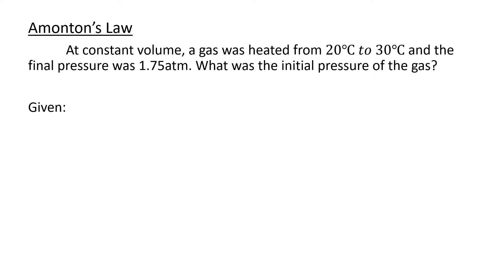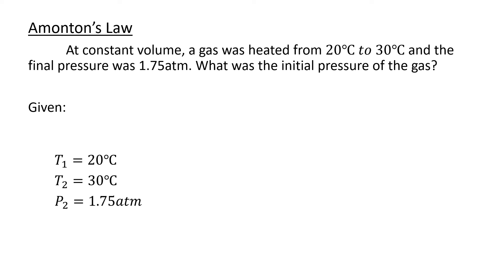Let us solve a problem involving Amonton's Law. At constant volume, a gas was heated from 20°C to 30°C and the final pressure was 1.75 atm. What was the initial pressure? The temperature increased, so based on Amonton's Law, the pressure also increased. That means 1.75 atm is greater than the initial pressure — so we expect P1 to be less than 1.75 atm.